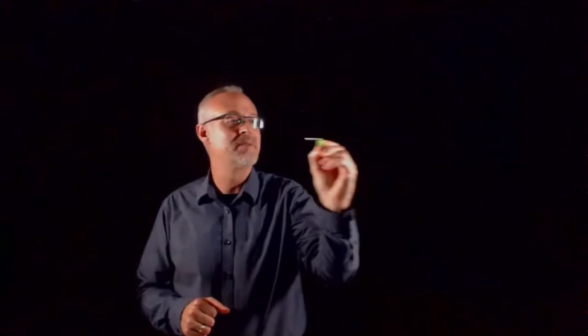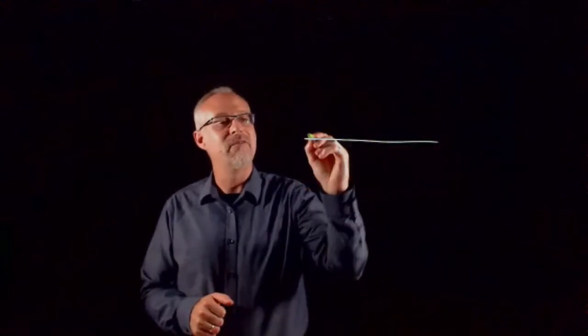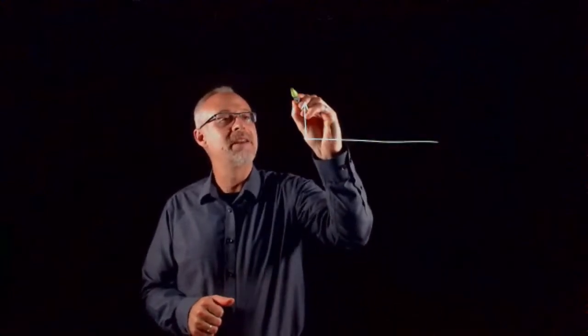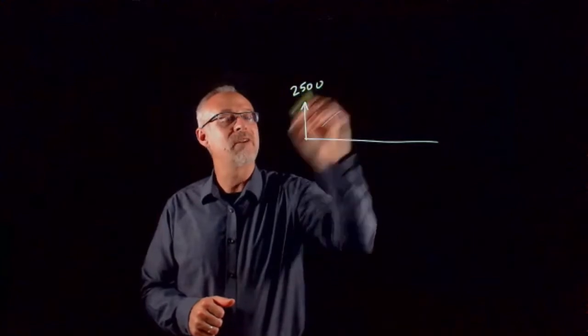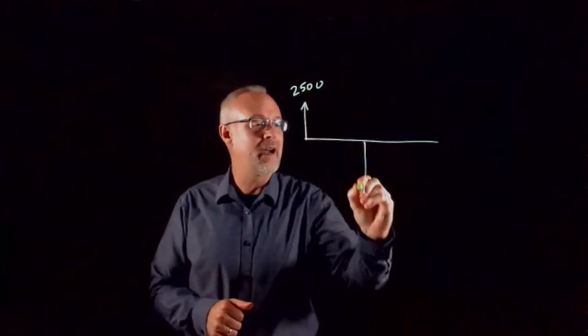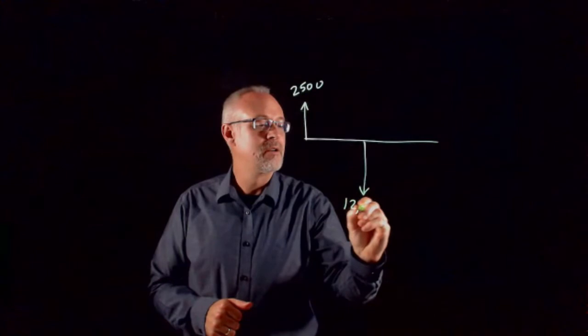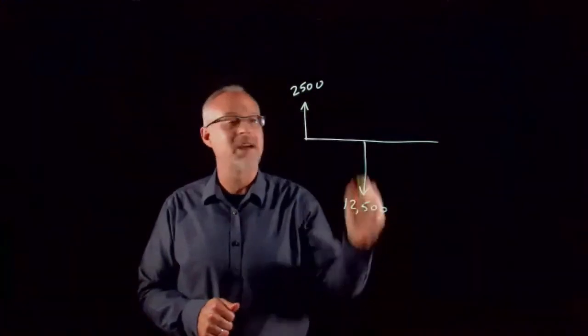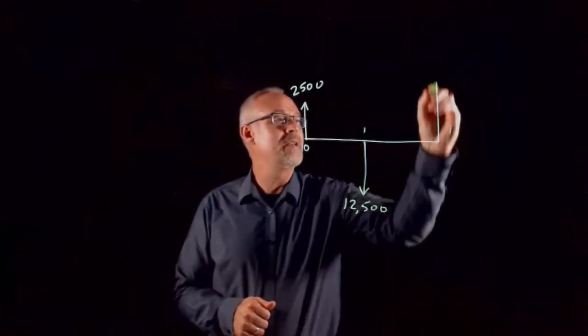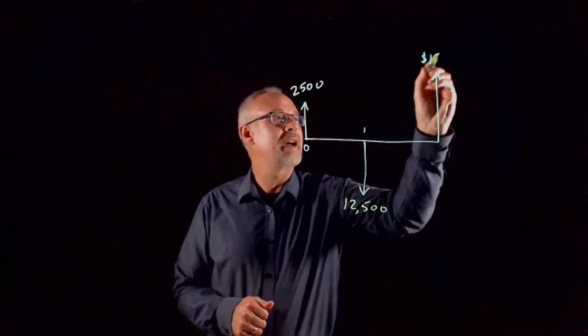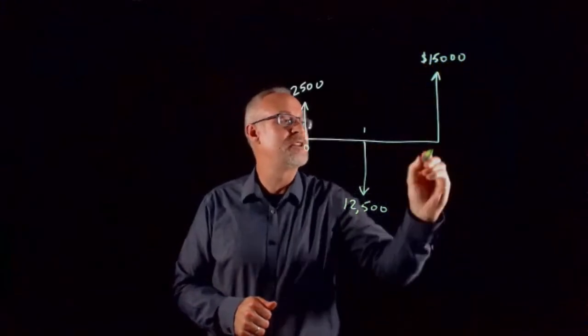Let me just draw this cash flow diagram again, because you got to get the idea of this. If I invest in a project that gives me $2,500 at the beginning, I pay out $12,500 at time t equal to 1, and then I receive $15,000 at time t equal to 2.